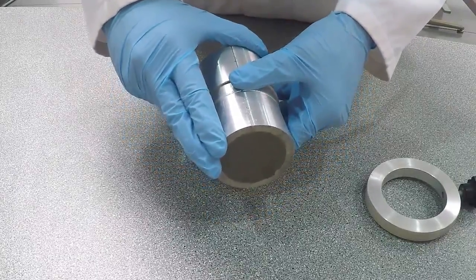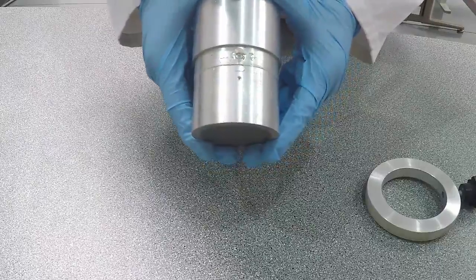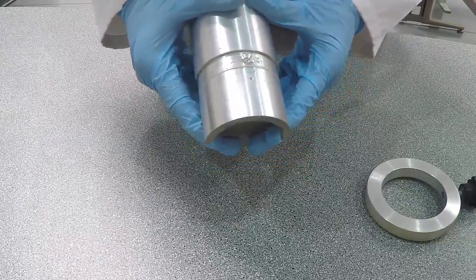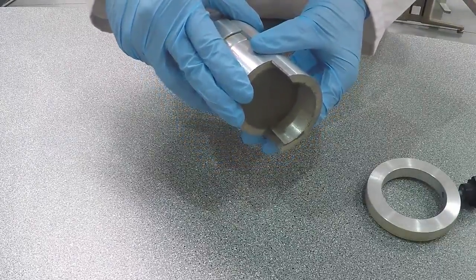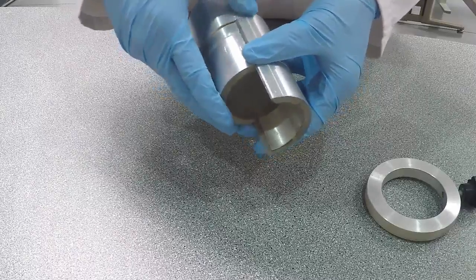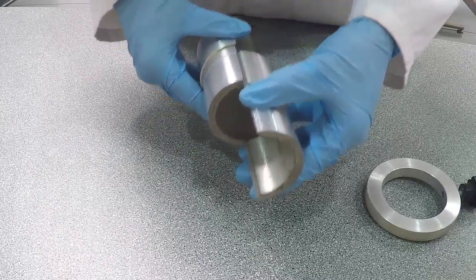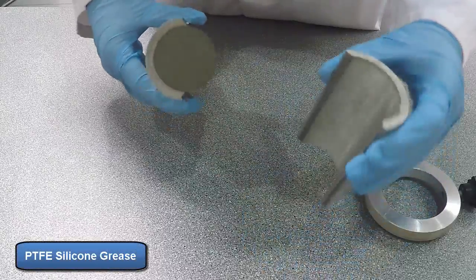In some cases, it can be useful to apply a small amount of non-corrosive silicone grease along the groove of the two halves of the split mould to help reduce resistance. We recommend the use of PT-FE silicone grease.